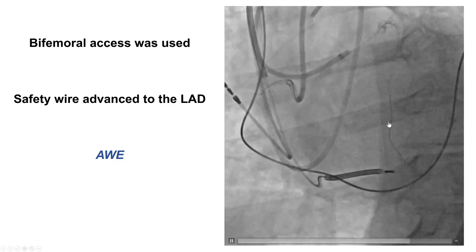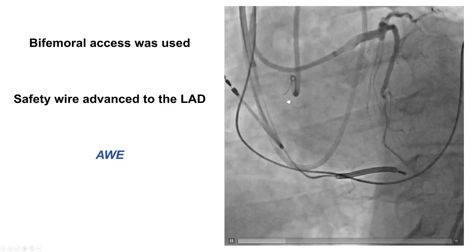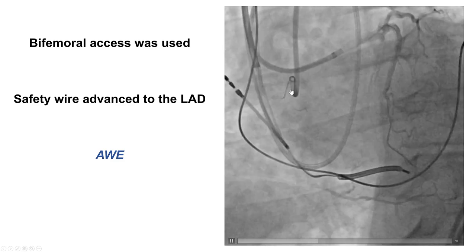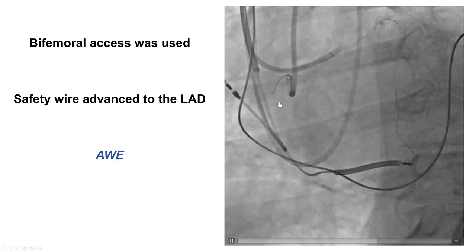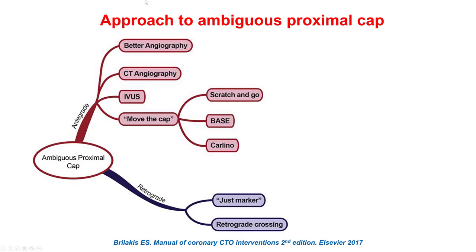Bilateral femoral access was obtained — EBU for the left and AMPLATZ 1 for the right. There are several ways to overcome the proximal CAP ambiguity. One is to do angiograms on different planes, which did not help in this particular case. The second is to use CT angiogram coregistration, which we'll illustrate in the next slide.